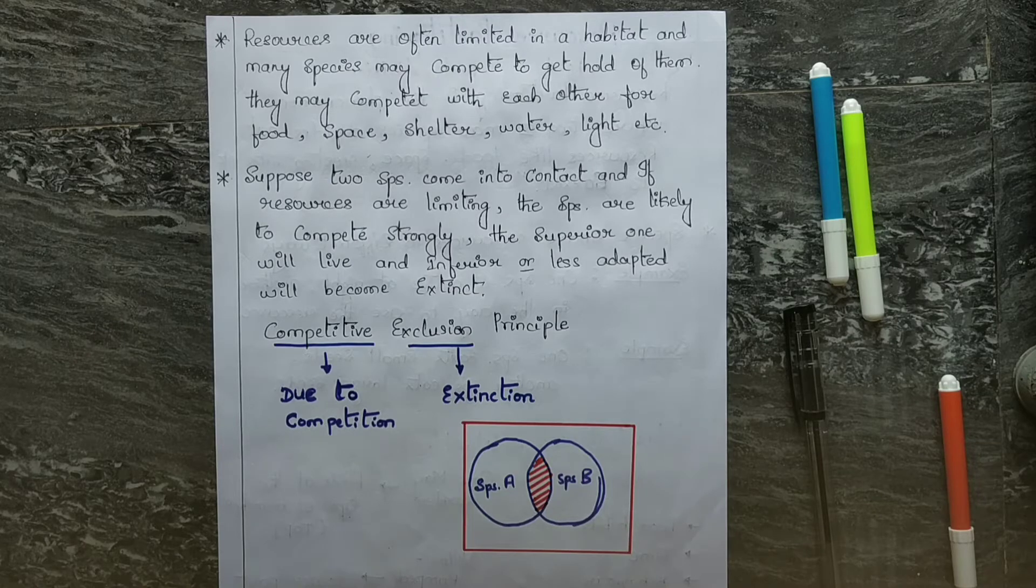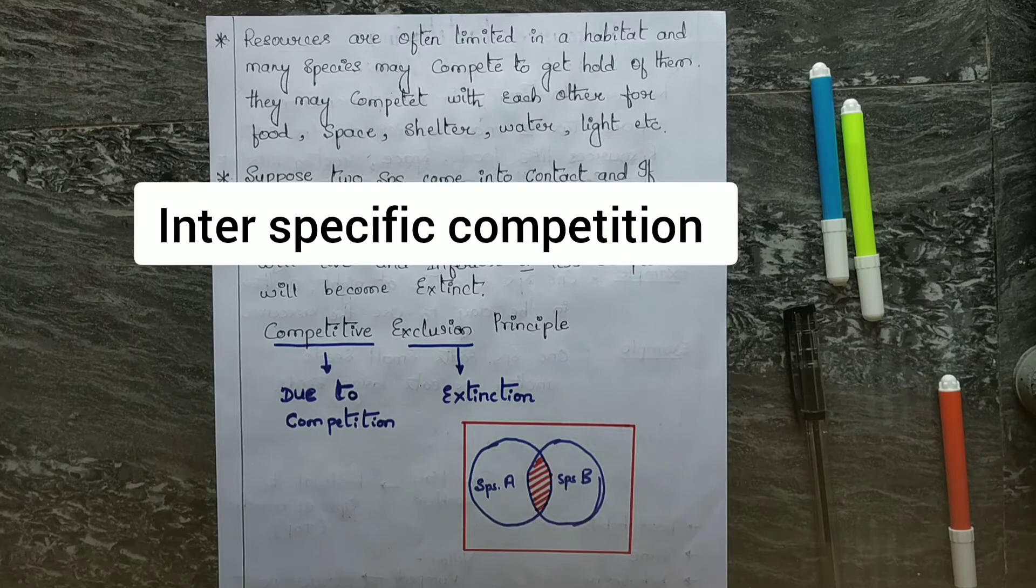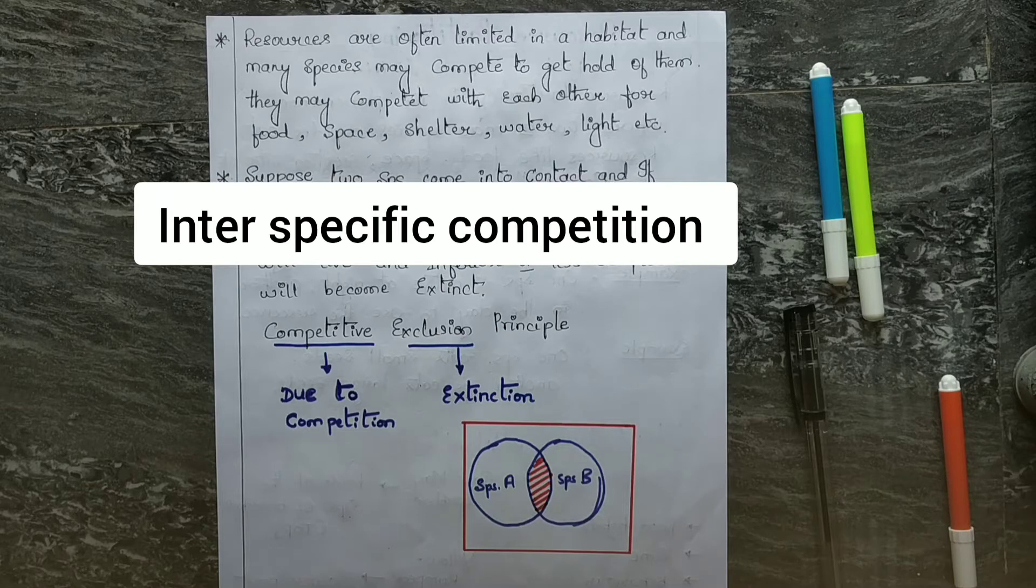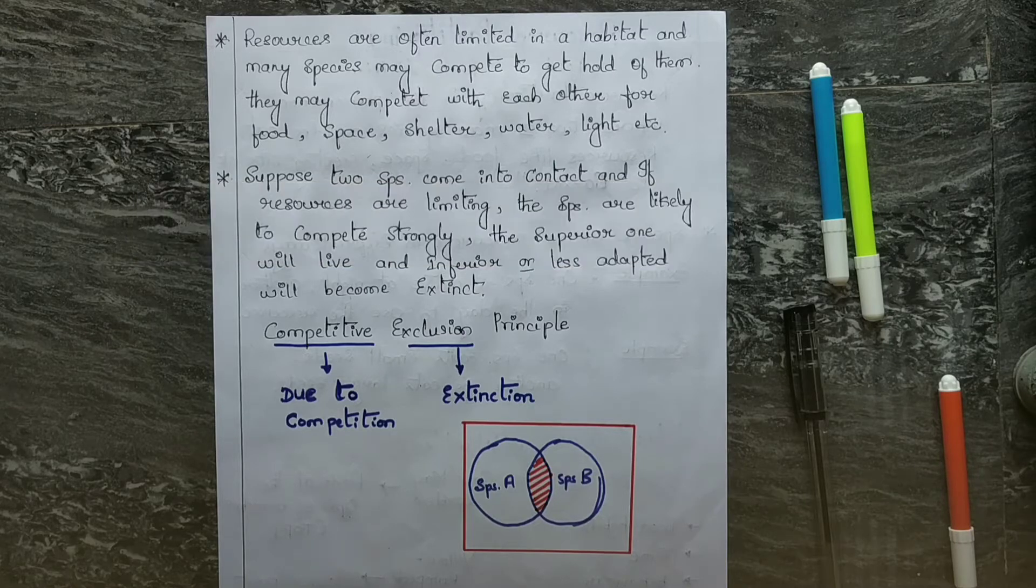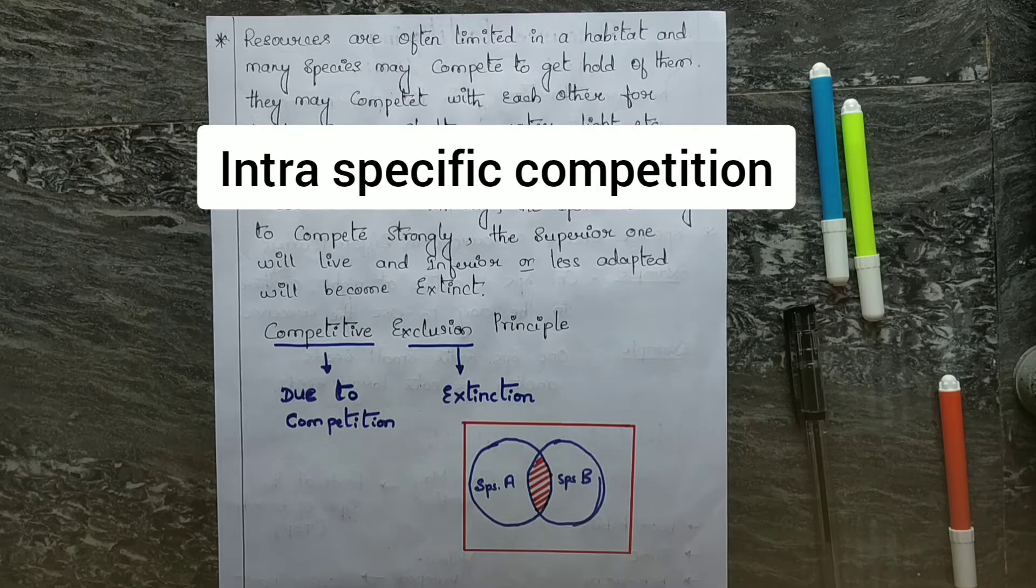We know that there are two types of competition: inter-specific competition and intra-specific competition. Inter-specific competition means competition between two different species, and intra-specific competition is competition within the same species.